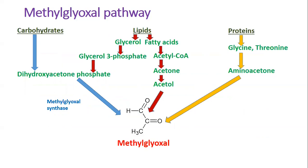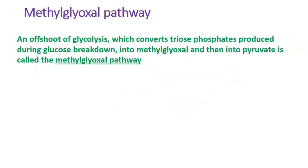Methylglyoxal can also be synthesized from acetone and acetol in a reaction catalyzed by acetone and acetol monooxygenase, which are types of cytochrome P450. And finally, it can be produced during amino acid breakdown via aminoacetone, brought about by amine oxidase. An offshoot of glycolysis, which converts triosephosphates produced during glucose breakdown into methylglyoxal and then into pyruvate, is called the methylglyoxal pathway.